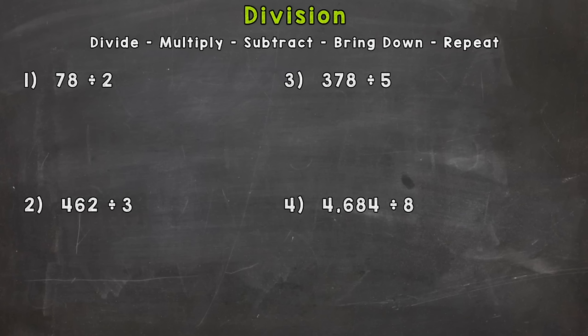So let's hop into number one here and we have 78 divided by 2. So we would set this up as 78 under the division bar and 2 on the outside. 78 is what we call the dividend and that's the number being divided. And the 2, the outside number, is the divisor.